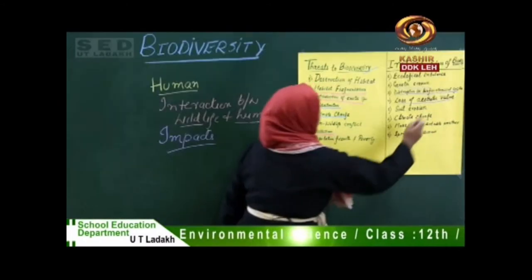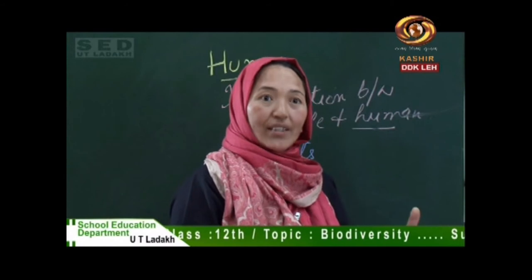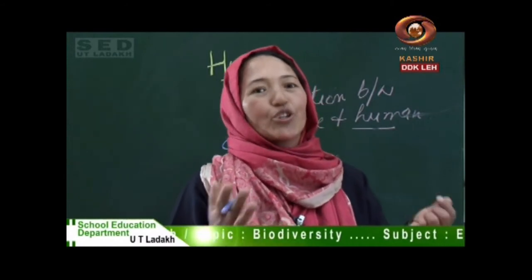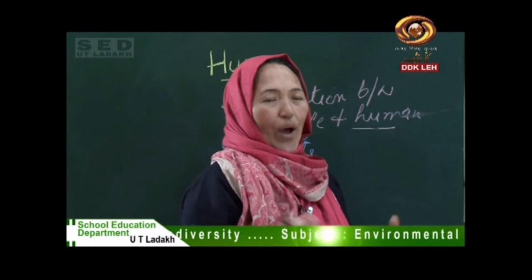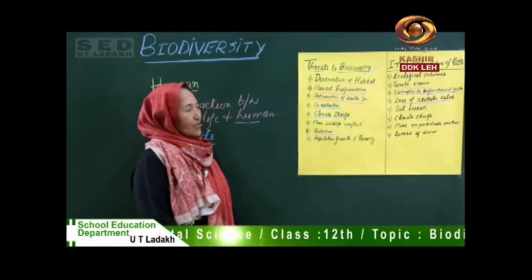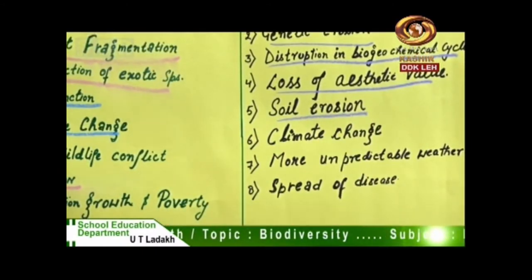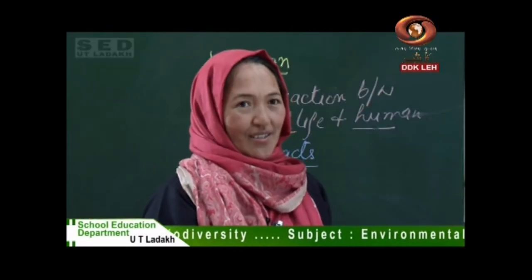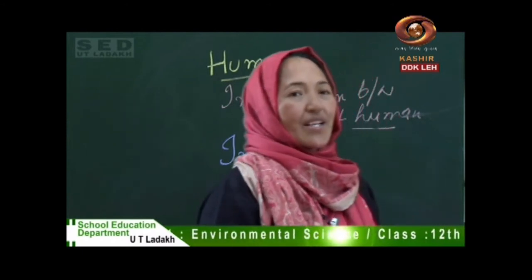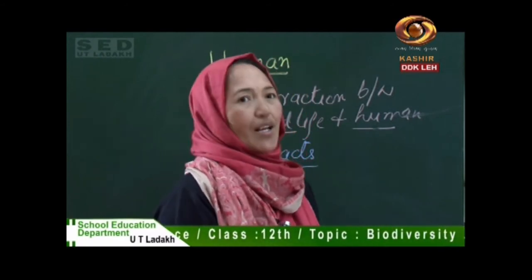Fourth is aesthetic value — because of biodiversity, water, grassland, and forest the earth looks beautiful. When this beauty declines, that is the loss of aesthetic value. Fifth is soil erosion — when there is deforestation, the soil comes down, which we call soil erosion. Likewise, in slope areas, landslides occur frequently, which disturbs human and wildlife too.